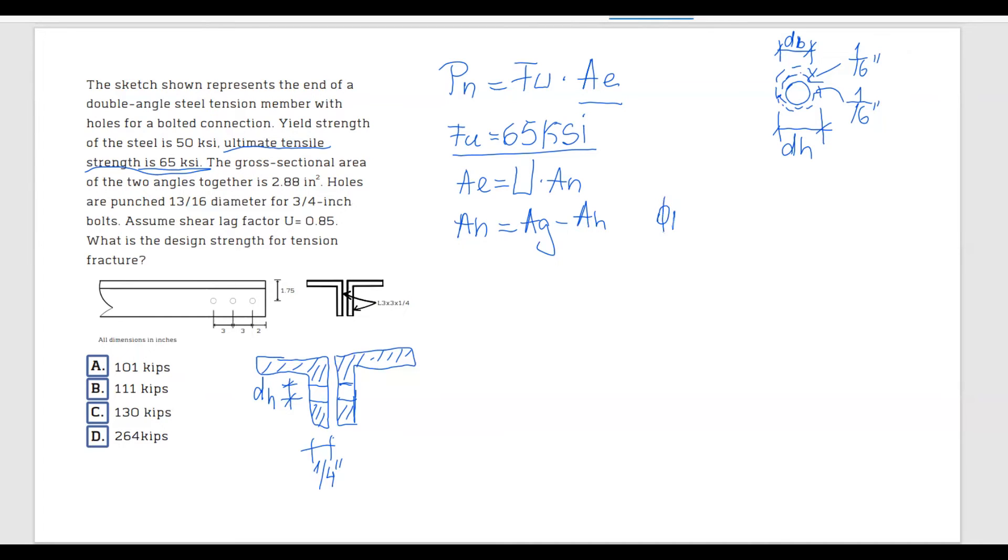So diameter of the hole is going to be equal to diameter of the bolt plus 1 over 16 of an inch. And this is due to oversize. You have to make the hole a little bit bigger to fit the bolt. And then plus another 1 over 16 of an inch, and this is due to damage due to punching.